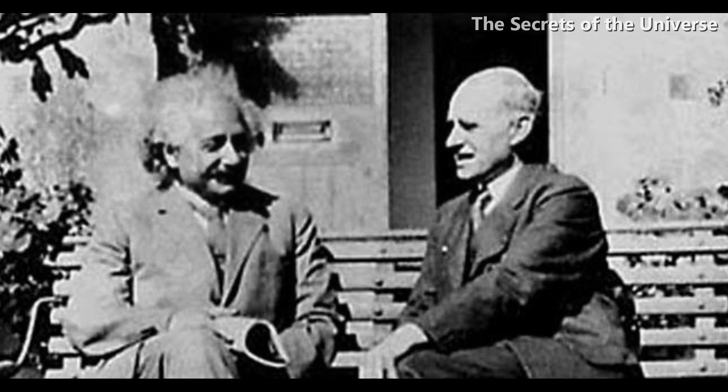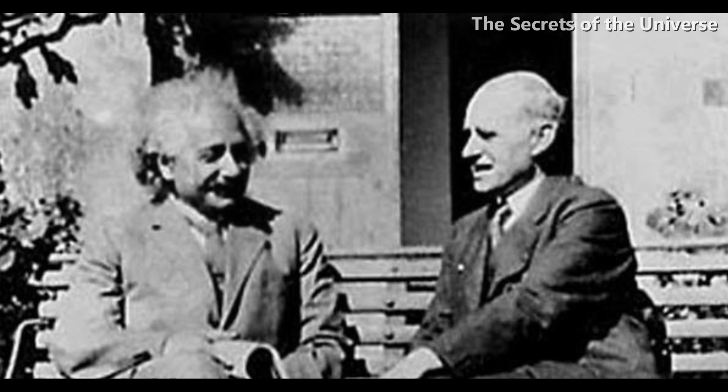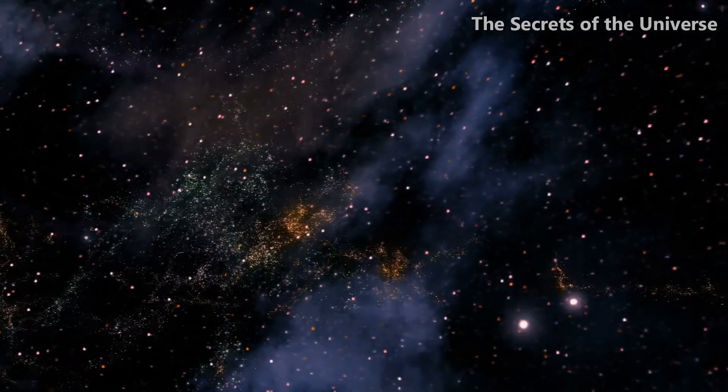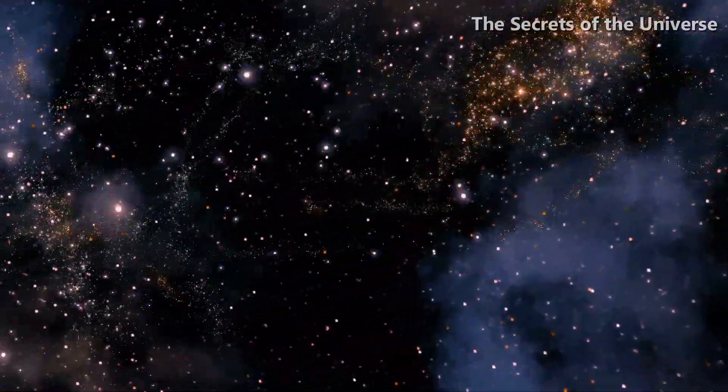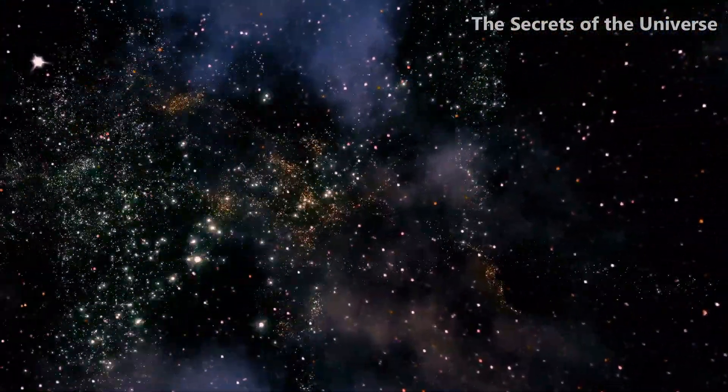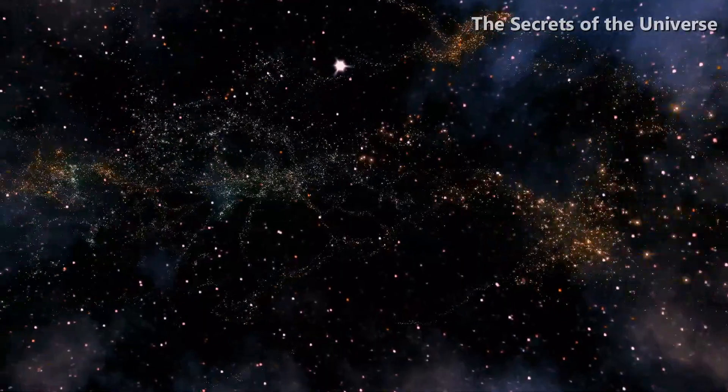Then came Arthur Eddington. For those who don't know about Eddington, he was the one who gave the experimental verification of Einstein's general theory of relativity back in 1919. Eddington had virtually single-handedly established the field of astrophysics and he was at the pinnacle of his career.